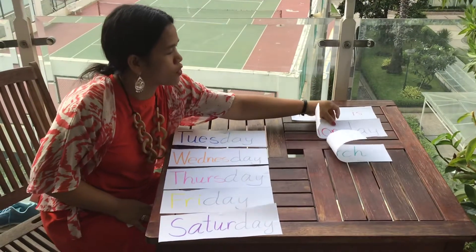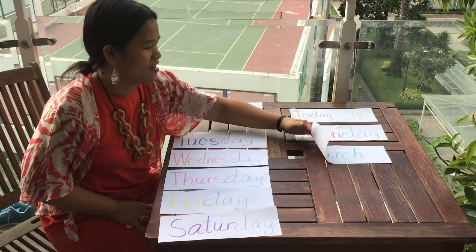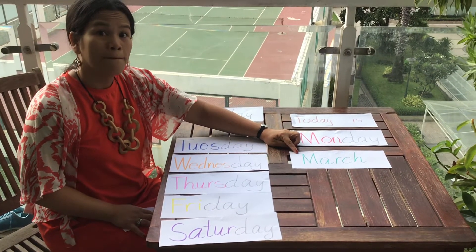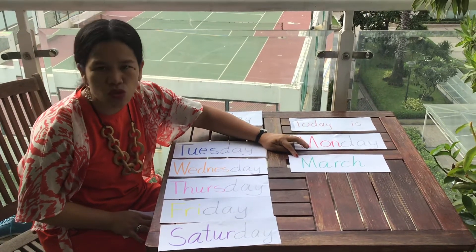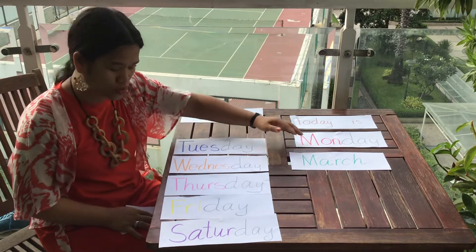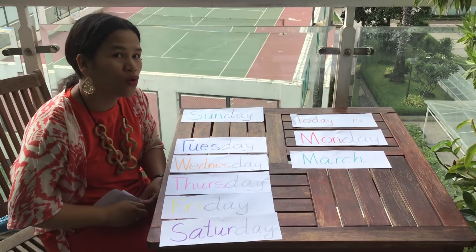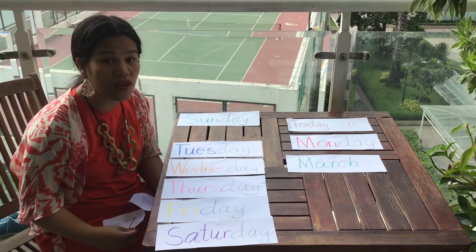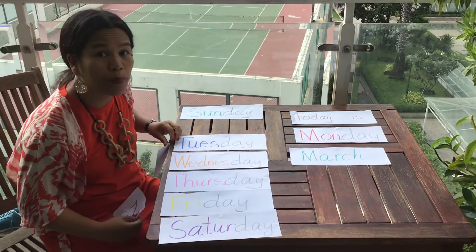Miss Julie will put Monday right there. It's windy out here. All right, we are starting the month of March. And it's not March 22 — yesterday was March 22. So what's the number that comes after 22? Yes, you're right, 23. Very good. Now this time, can you hop?